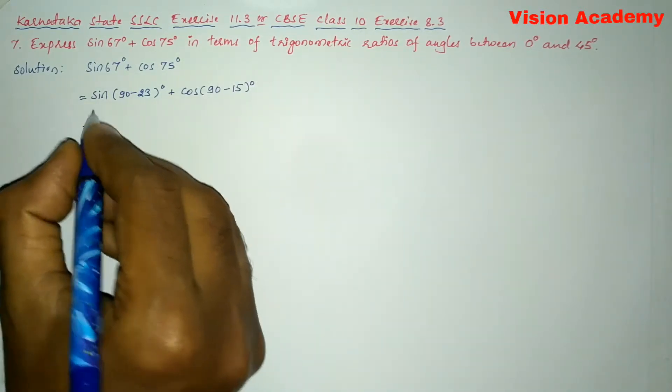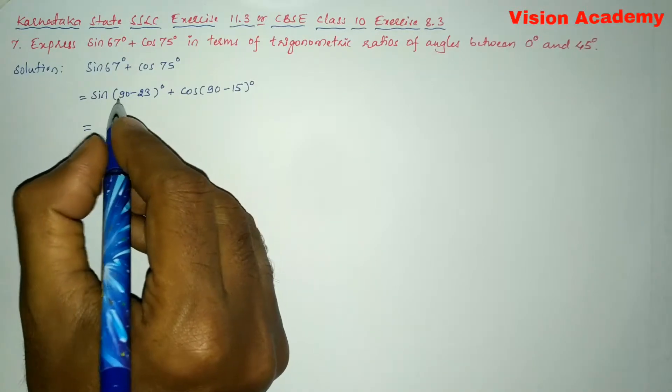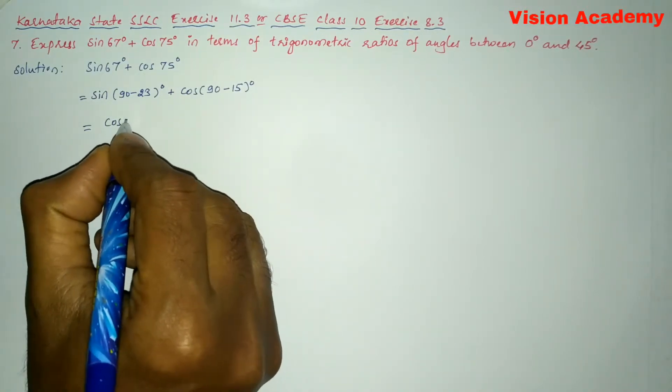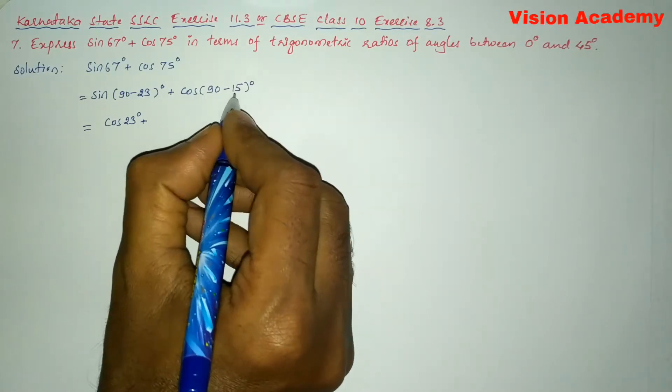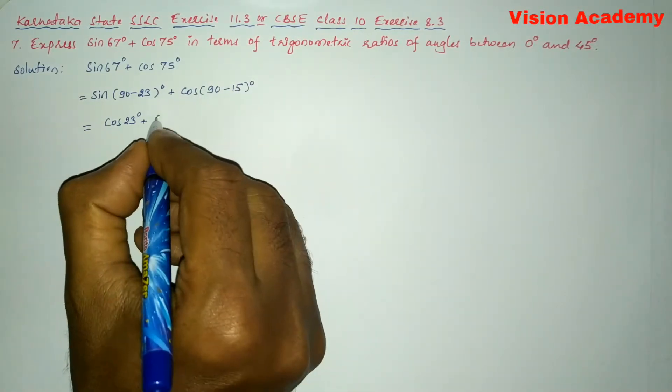So here let us further write sin 90 minus 23 degree gives us cos 23 degree plus this cos 90 minus 15 gives us sin 15 degree.